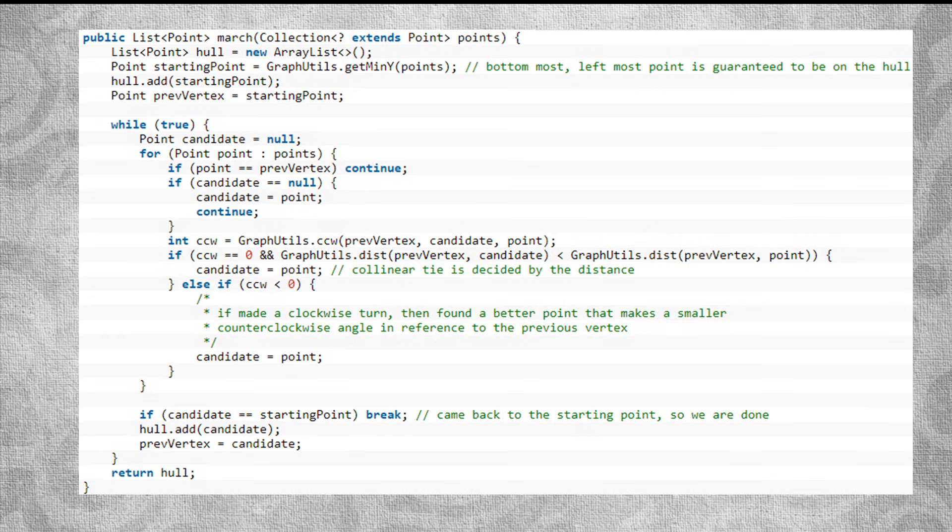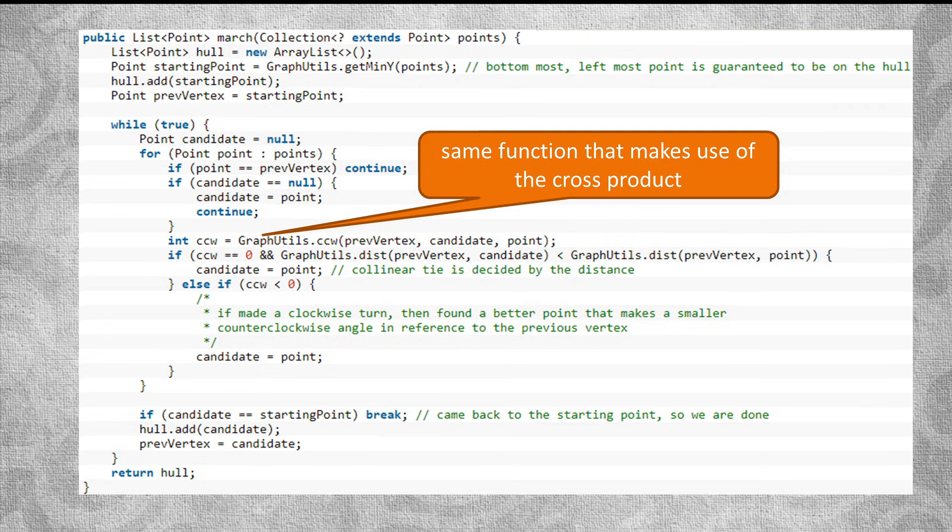By the way, the function for finding the point with the smallest counter-clockwise angle is exactly the same as the one used previously that makes use of the cross product. As a little bonus, dealing with collinear points is also a little easier, because here you just need to pick the point that is furthest away distance-wise, without needing to worry about the slope of the line.